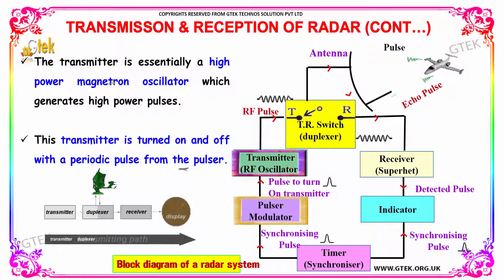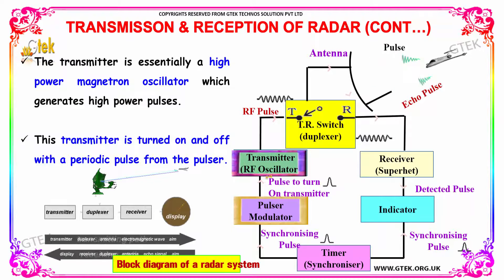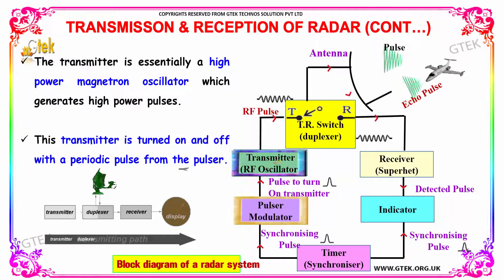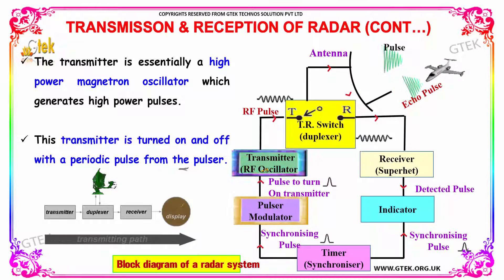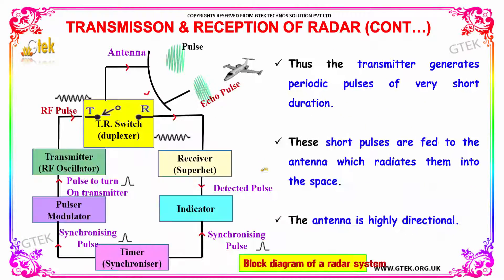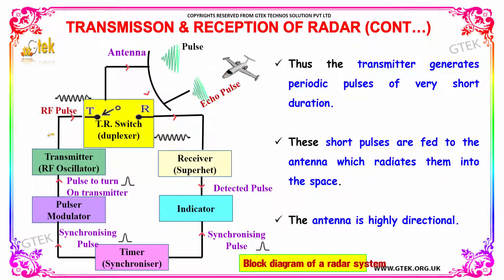The transmitter is essentially a high-power magnetron oscillator, which generates high-power pulses. The transmitter is turned on and off with a periodic pulse from the pulser. Thus, the transmitter generates periodic pulses of very short duration, which are fed to the antenna and radiated into space.